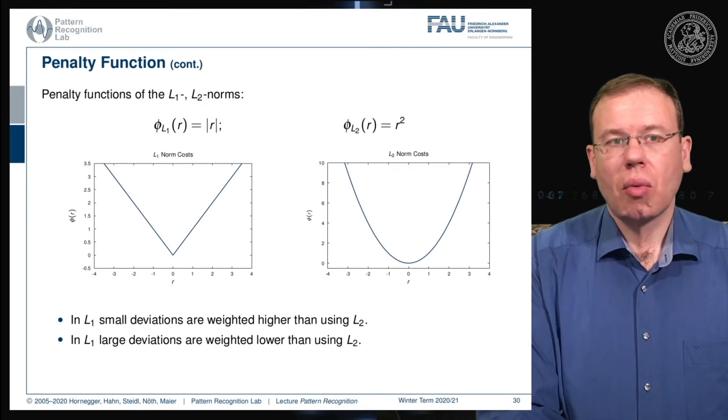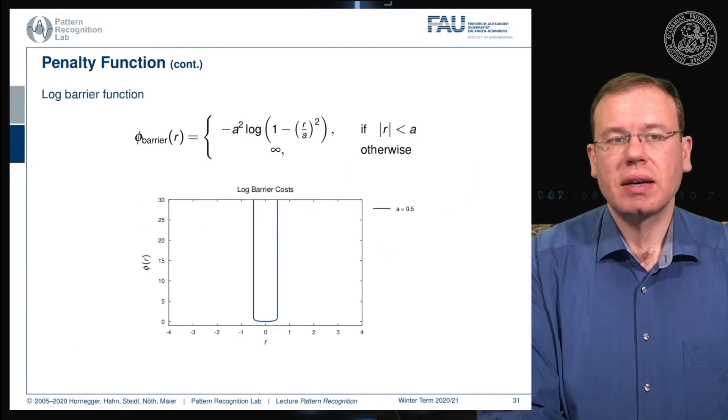Let's look into more penalty functions. A very well known one is the so-called log barrier function. This is chosen to be essentially constrained around a certain area within the region A. As soon as you leave this area, your penalty will be infinite. This is often used to prevent solutions that would go into areas beyond A. They would have an infinite penalty, so these solutions are not feasible for your minimization problem.